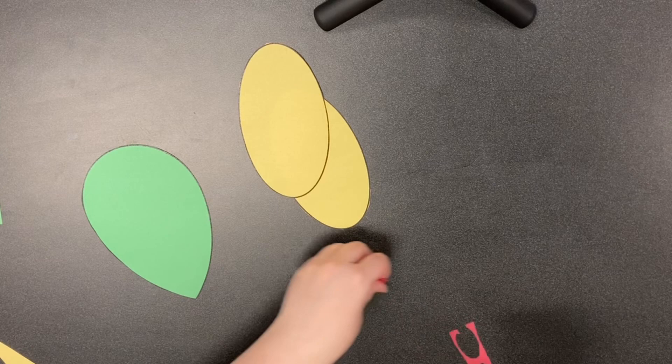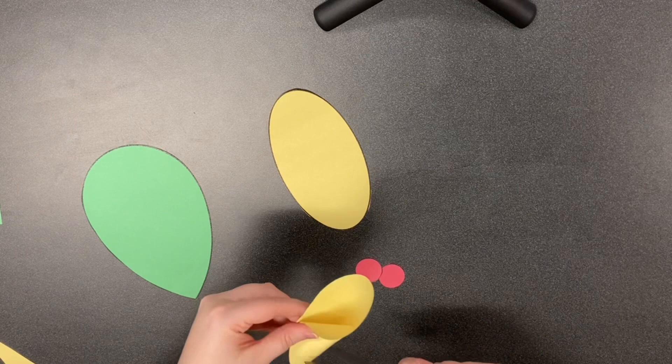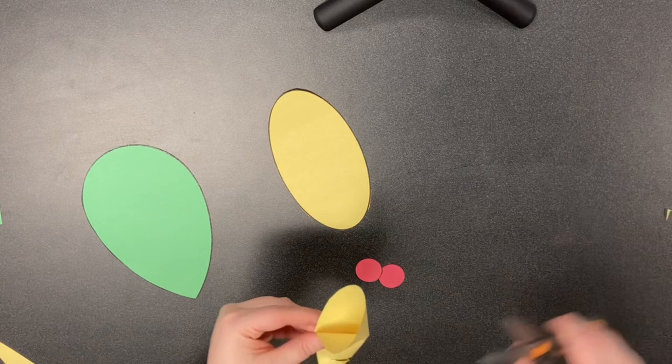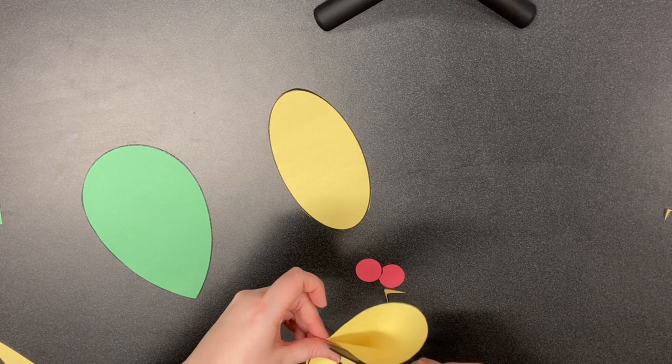Next, once we have all of that cut out, take the wings and fold them in half. You don't have to fold them really good. Then you cut little strips out. You can make them in any kind of shape you want.